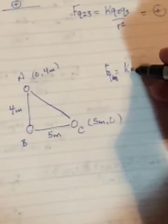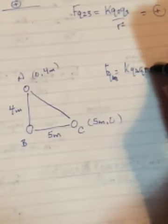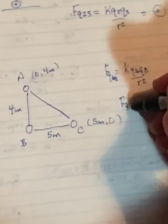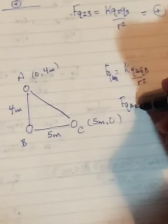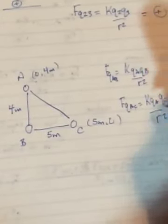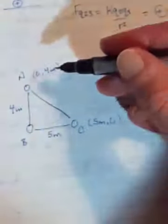Over R squared, and then you're going to need to do FQ AC and do KQA QC over R squared. And then once you have those two forces, that's the force that B is putting on A and the force that C is putting on A.